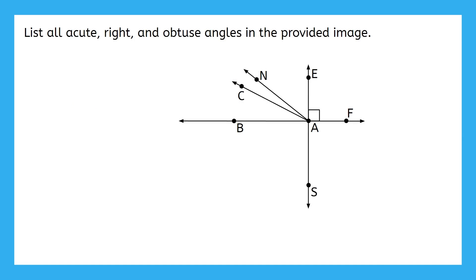Here's that practice problem. It's said to list all acute, right, and obtuse angles in the image. Let's go over the answers to this and see if you were able to find all of them. I actually want to start by going through all the right angles first, even though that's probably not the order you found them in. We know angle EAF is a right angle because of the symbol on the picture.